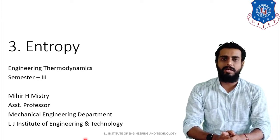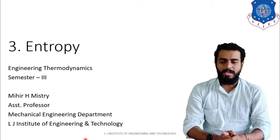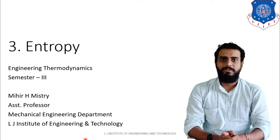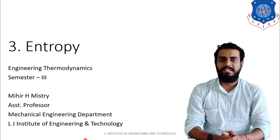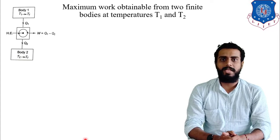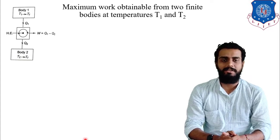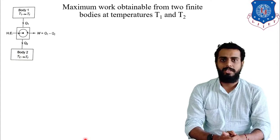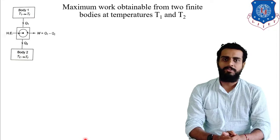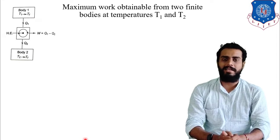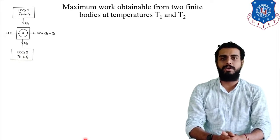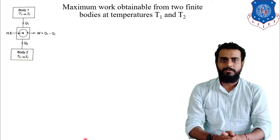Today we are going to continue our session on the chapter Entropy, and in particular we are going to discuss maximum work obtainable from two finite bodies at temperatures T1 and T2 respectively. This is nothing but an application of the Entropy Principle.